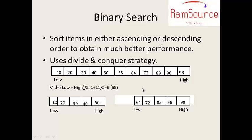And binary search. If you look at sequential search, it checks each element one by one. Binary search uses a Divide and Conquer strategy — please make a note of it. Now, we have low and high in the array, for example 10, 20, 30. We have a low pointer parameter and we find the middle element. How do we find the middle? Low plus high divided by 2.